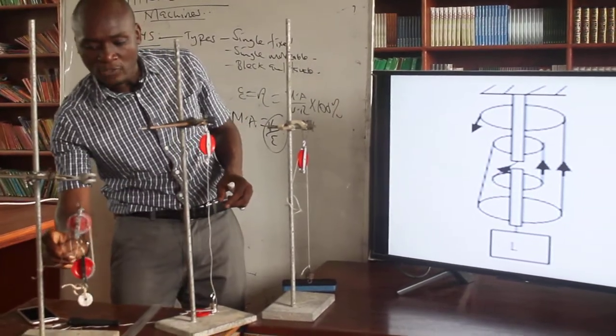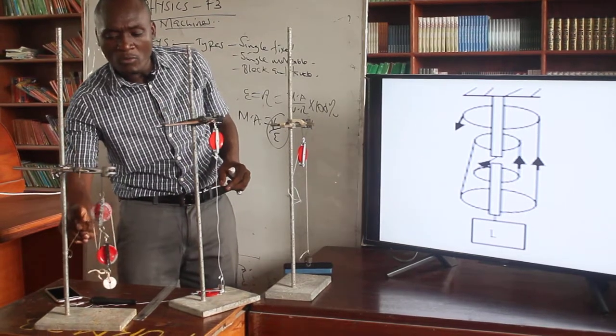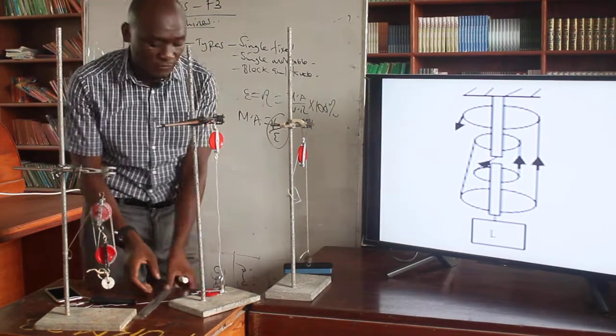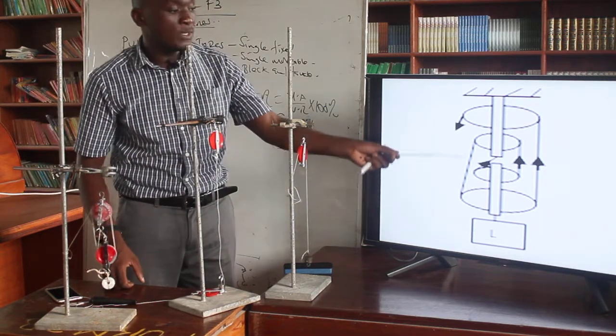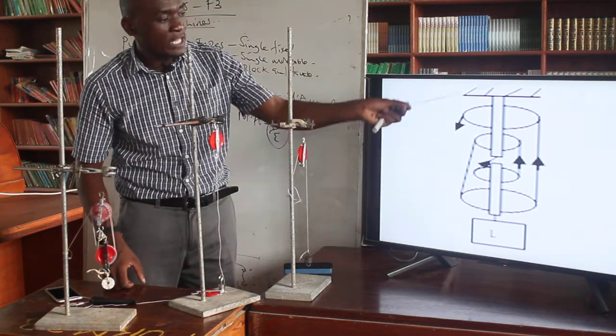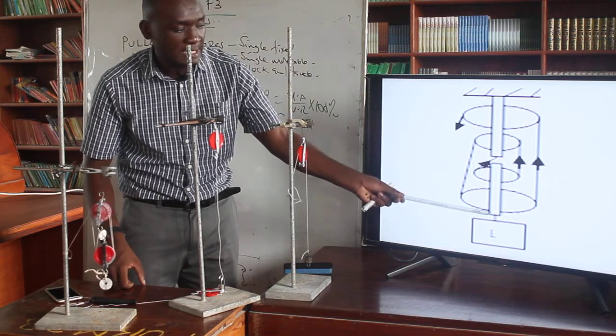Now, this is the effort. I'm pushing, I'm pulling. And of course, the movable part is moving, the fixed part is fixed. You can see that as I pull this effort, the load is actually moving on the upper side. This part of the pulley is fixed, but this part is movable.